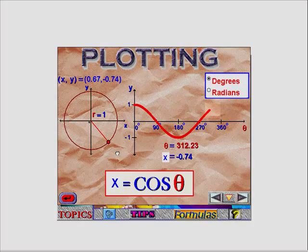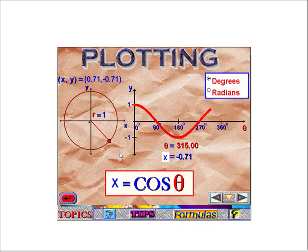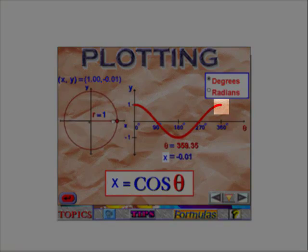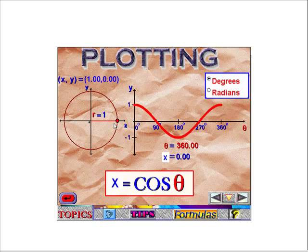But in quadrant 4, at a reference angle of 45 degrees, well cosine is positive, so that'll equal a positive 7 tenths. And bringing us back to 360 degrees, again cosine of 360 degrees is positive 1.